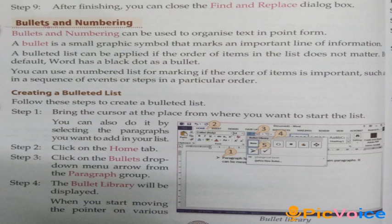Bullets and Numbering. Bullets and numbering can be used to organize text in point form. A bullet is a small graphic symbol that marks an important line of information. A bulleted list is used when the order of items does not matter. By default, Word uses a black dot as a bullet. A numbered list is used when the order of items is important, such as in a sequence of steps.